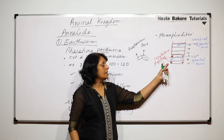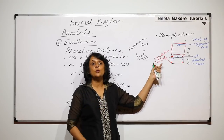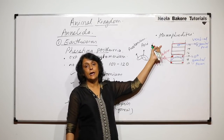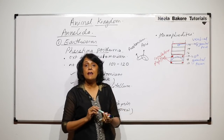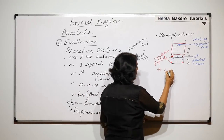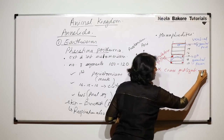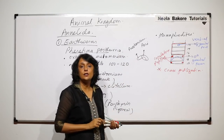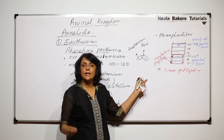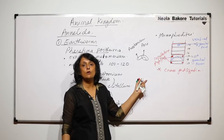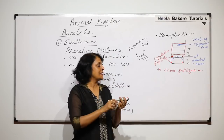The copulatory papillae help in holding the other earthworm during copulation. Earthworms are hermaphrodites — both male and female sex organs are present in the same worm — but they favor cross fertilization. Now, before explaining how cross fertilization takes place, let us talk about one more structure: the spermatheki.